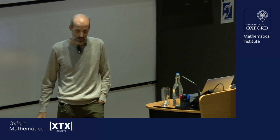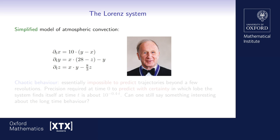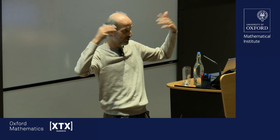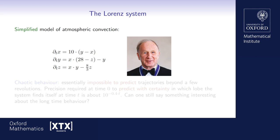A completely different example is a system first studied by Lorenz, a British meteorologist. In the 60s he came up with a simple model for atmospheric convection — essentially the large-scale motion of the atmosphere.